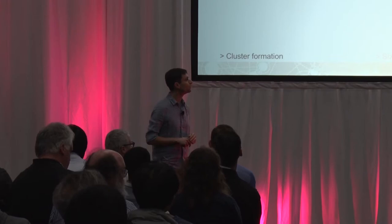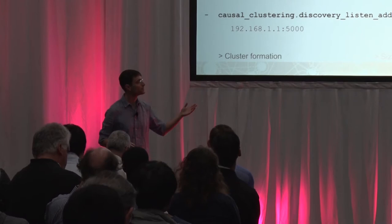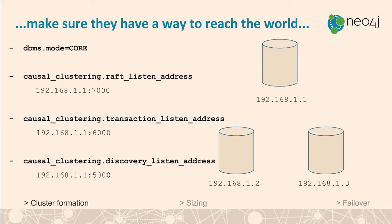You need to make these instances able to talk to the world by opening some ports and configuring settings so they can transfer information between each other. There are three ports to consider. The first is the route mission address, which is necessary for transferring RAFT information across the cluster. RAFT is the atomic broadcast protocol we use — it ensures every transaction happens in consensus. When you commit a transaction, at least half the cluster members plus one will have a copy before you receive a successful commit notification.